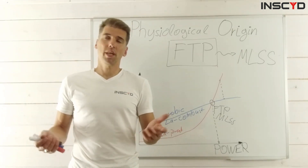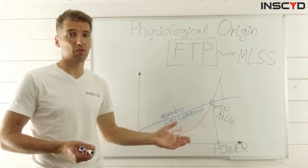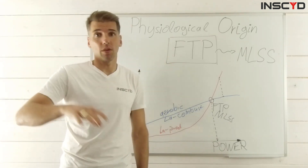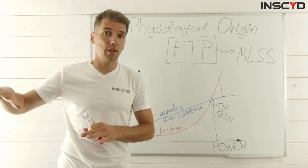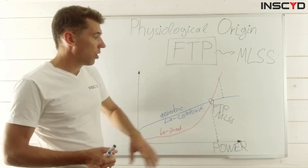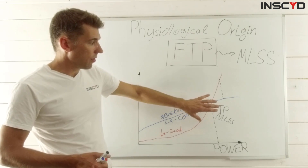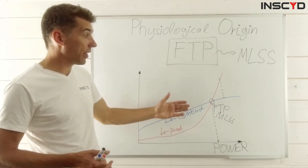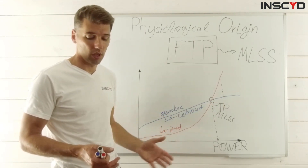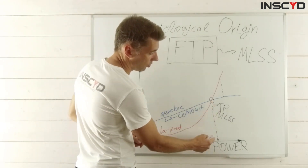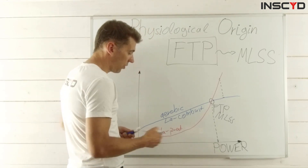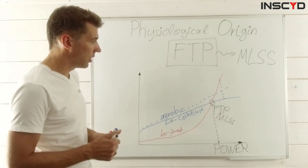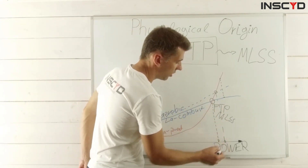If you made it this far, you may ask: how does this affect my training? Consider one athlete with 200 watts threshold, another with 300, another with 400. What is different? Since FTP is created by the combination of these two systems, the only way to change your power output at threshold is to change one or both. For example, increasing the ability to combust lactate shifts the crossing point further to the right, giving you a higher power output.